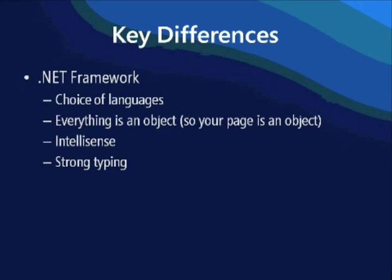You get the benefit in the .NET world of IntelliSense, at least if you're using one of the tools that supports it such as Visual Studio. We store a lot of metadata about your code and about the code in the .NET framework class library — what are the properties on those classes, what are the methods on those classes, etc. As you type your code, we can prompt with the available methods, properties, and various members of the classes. We'll highlight syntax errors, and in VB.NET we can highlight semantic errors as well. It's a huge productivity gain — if you're not used to IntelliSense, it's an absolute boon.